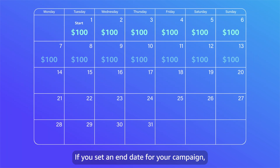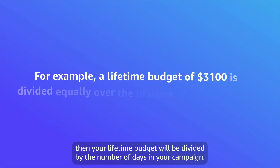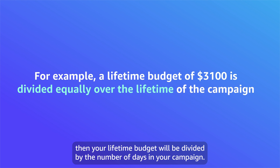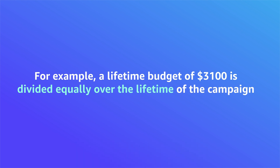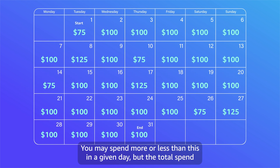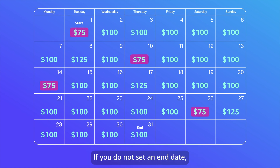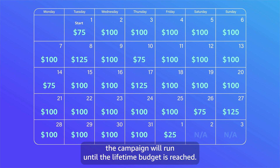If you set an end date for your campaign, then your lifetime budget will be divided by the number of days in your campaign. You may spend more or less than this in a given day, but the total spend over the course of the campaign will never exceed the lifetime budget. If you do not set an end date, the campaign will run until the lifetime budget is reached.